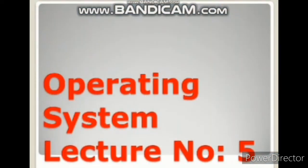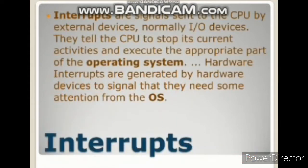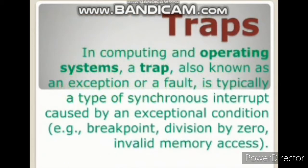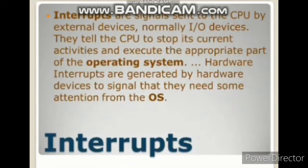Assalamu alaikum, I'm Mahabhadi and in today's video we are going to discuss about two topics: the first one is the interrupt and the second one is the trap. First of all, looking at interrupts — interrupts are basically the signals that are generated by the input/output or other devices to get the attention of the CPU. When an interrupt occurs, the control goes to the operating system and it provides some service to that signal.